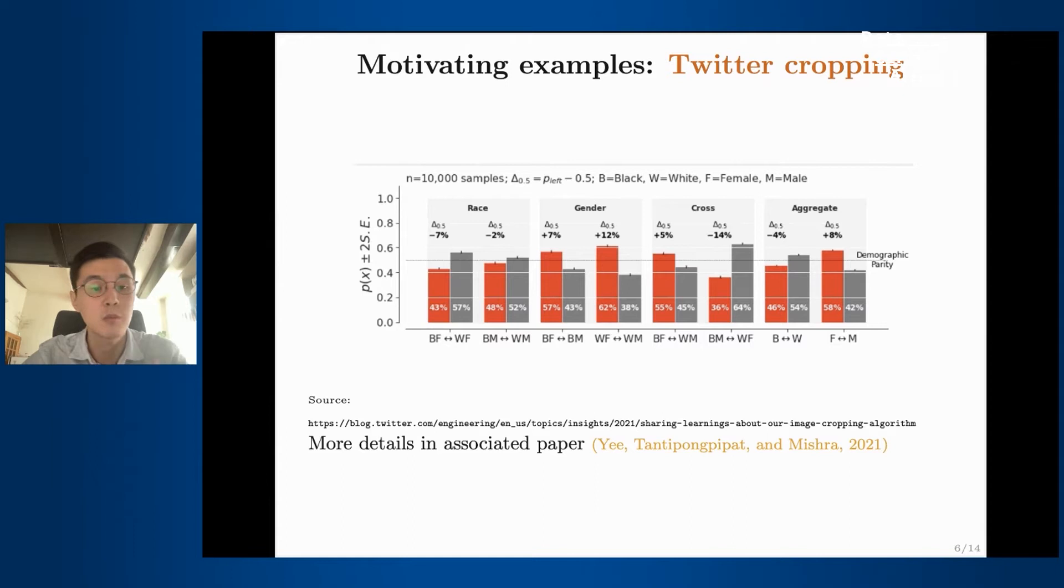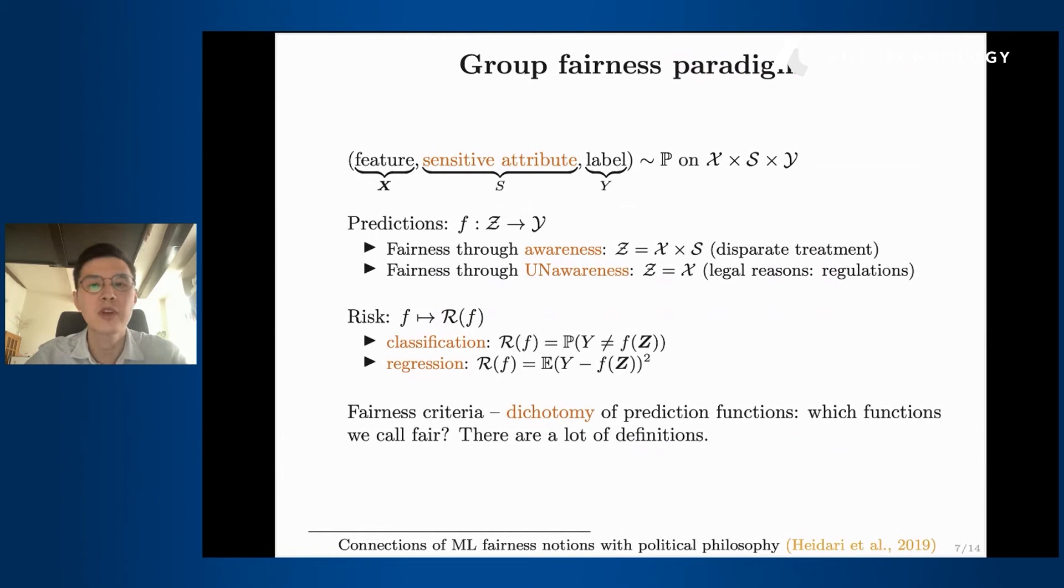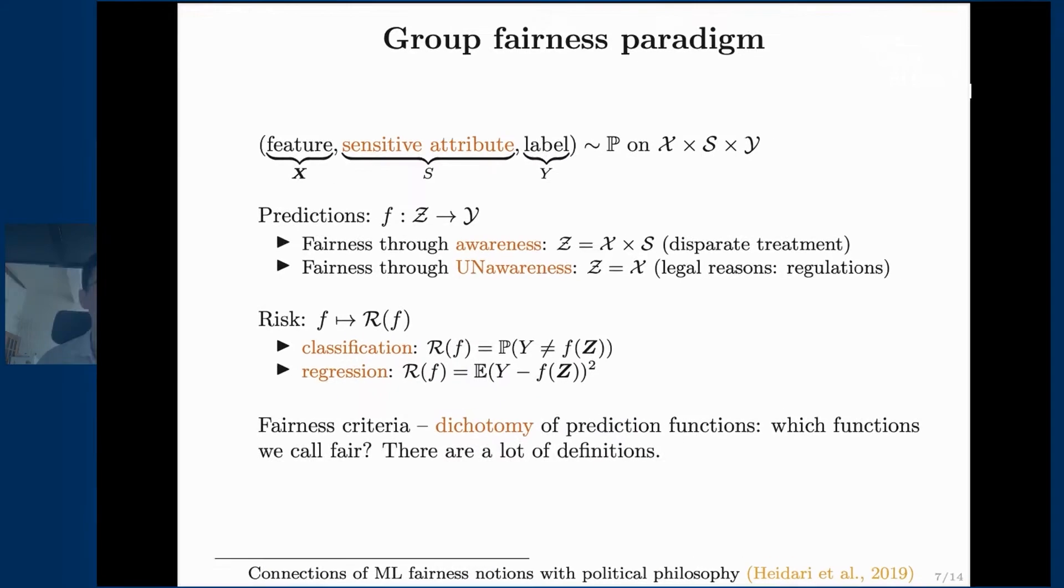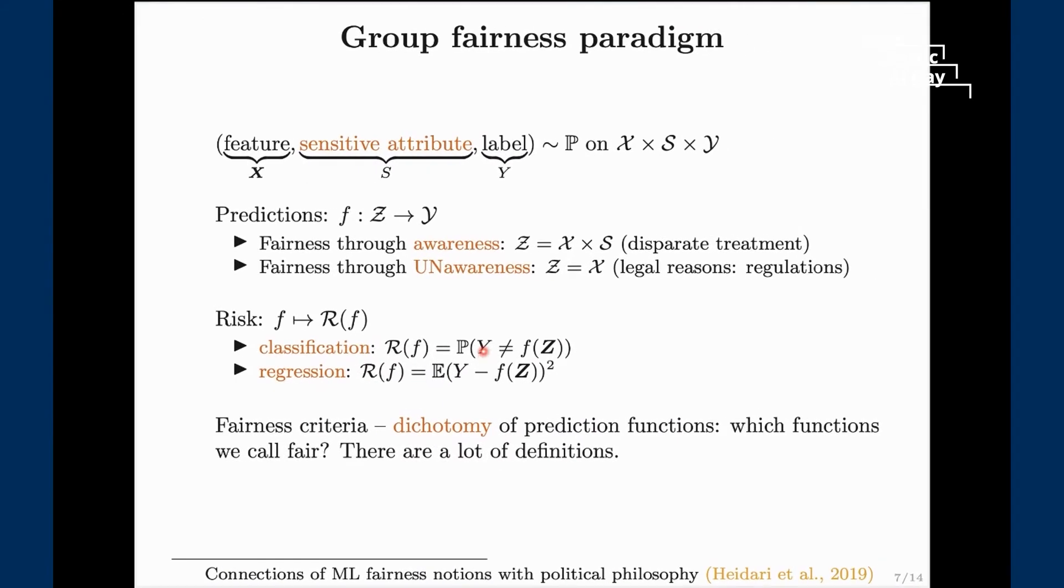One way to do it is through what people call group fairness paradigm, where we want to avoid discrimination based on certain sensitive attributes in our sub-populations. Typically in learning you have feature vectors and labels, and you want to given a new feature vector predict the label. In group fairness we're adding one more variable which we call sensitive attribute. Let's say it's male or female, or based on race. It can be height, so it doesn't really have to be something extremely obvious, it can be anything.